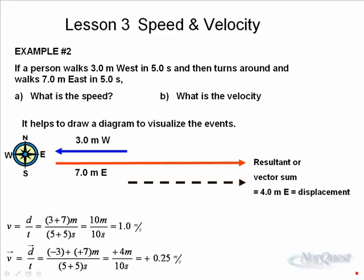As you can see, this first calculation is distance over time, three plus seven again, over five plus five again, ten over ten equals one point zero meters per second.